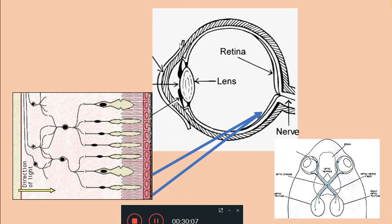The nictitating membrane develops from the eyelids at a later stage. The two eyelids and nictitating membrane develop, and the inner lining epithelium of the eyelids gives rise to the conjunctiva, which is fused with the cornea. So conjunctiva is formed from the eyelids — here will be the upper eyelid and here will be the lower eyelid, and extending between them is the conjunctiva.